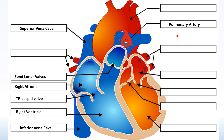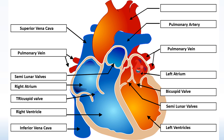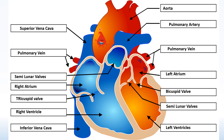At the lungs, the blood becomes oxygenated through the process of gaseous exchange, and then returns back to the heart via the pulmonary vein — hence why it is now shown in red on the left-hand side. It goes into the left atrium; the left atrium contracts, sending blood through the bicuspid valve into the left ventricle. The bicuspid valve again prevents backflow of blood back into the left atrium. The left ventricle contracts, sending blood into the aorta and then to the working muscles.